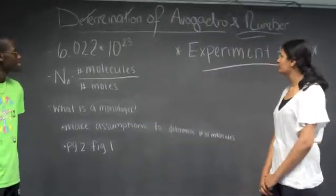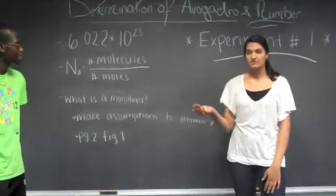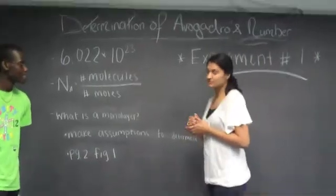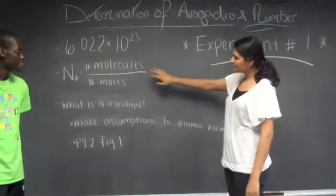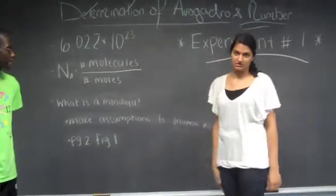The first experiment is going to be determining Avogadro's number. As we all know, Avogadro's number is 6.022 times 10 to the 23rd. And to determine this, we need to find the number of molecules divided by the number of moles inside a monolayer.